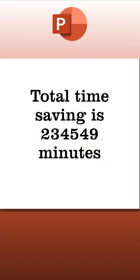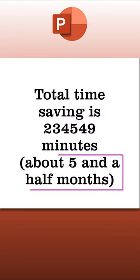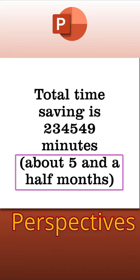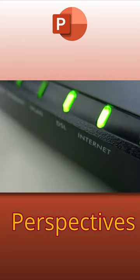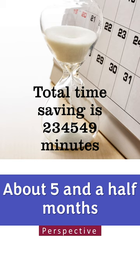So I type this in a slide. I got a brown dash line. Click on it — now it converted those minutes to months, much easier to understand. This is called Perspectives. It requires an internet connection, of course. If you click on the Designer button in the Home tab, it will even add a relevant picture. Absolutely fabulous.